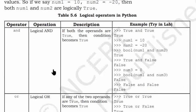Table 5.6: Logical operators in Python. Operator: and, Operation: Logical AND. Description: If both the operands are true, then condition becomes true. Examples: True and False is False, True and True is True, num1 equals 10, num2 equals minus 20.